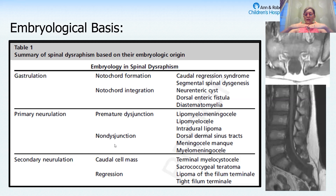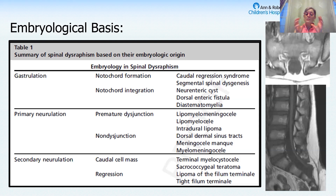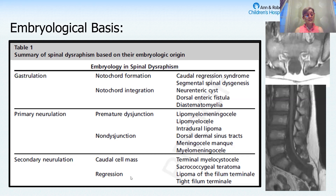The primary neurulation defects — remember that's the neural plate becoming the neural folds becoming the neural tube — involve abnormalities in the closure of the neural tube. Non-disjunction, where the tube remains open, gives you the myelomeningocele, or open spina bifida.